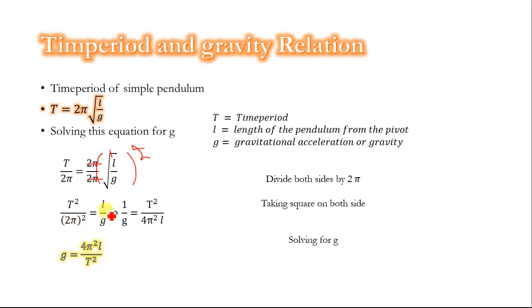Now solving this for g, we finally get g = 4π²l/T². From this equation, you can see that the value of g depends on the length of the pendulum and the time period of the pendulum.